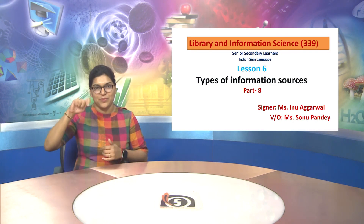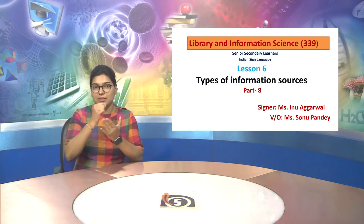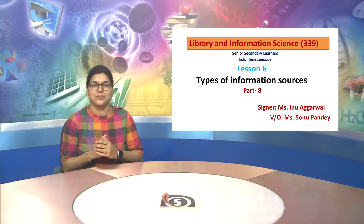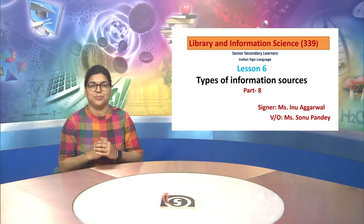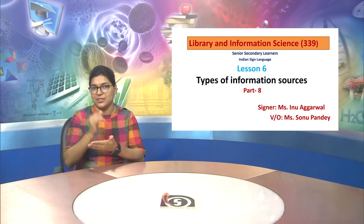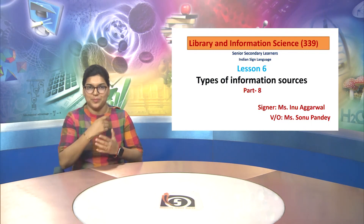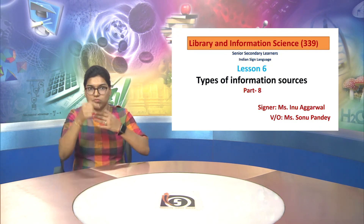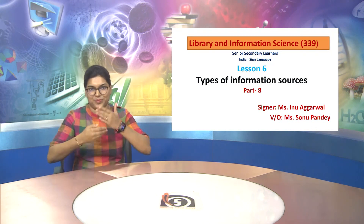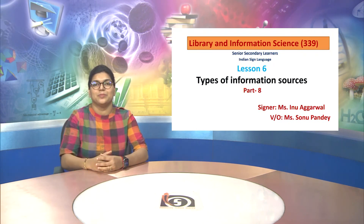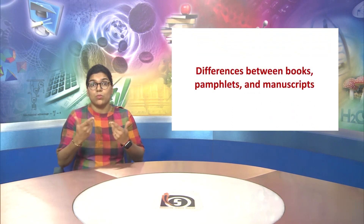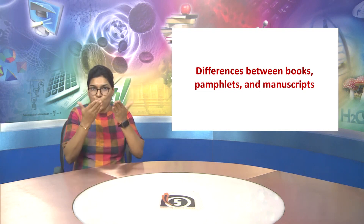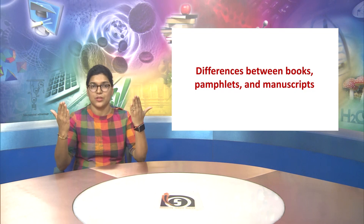N.I.O.S. welcomes you in this educational video for subject Library and Information Science, Code 339, Senior Secondary Level. Lesson No. 6: Types of Information Sources. This video is Part 8. In this video we will understand the difference between books, pamphlets and manuscripts.